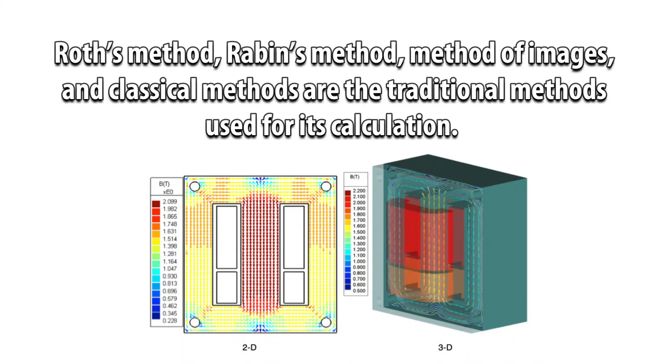Roth's Method, Rabin's Method, Method of Images, and Classical Methods are the traditional methods used for calculating transformer reactance.